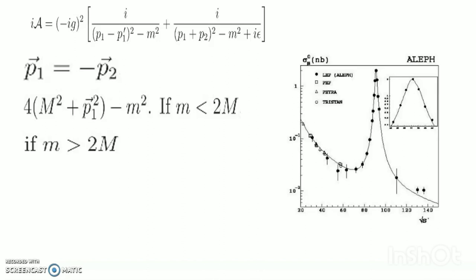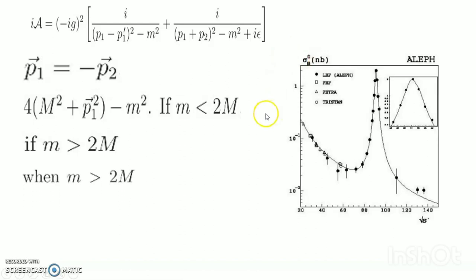When correctly treated, this instability adds a finite imaginary piece to the denominator, which overwhelms the iε. Nonetheless, the increase in the scattering amplitude near the second diagram, where 4m² + p² = M², is what allows us to discover new particles — they appear as resonances in the cross-section.